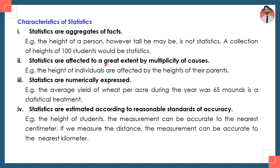The second characteristic: statistics are affected to a great extent by multiplicity of causes. For example, the heights of individuals are affected by the heights of their parents and many other factors — multiple factors affect a variable or characteristic. The third characteristic: statistics are numerically expressed. For example, the average yield of wheat per acre during the year was 65 maunds — that is a statistical treatment.